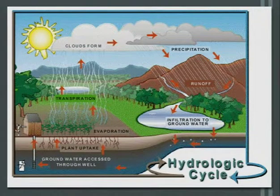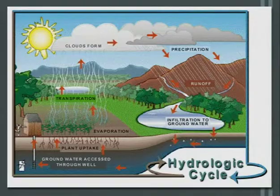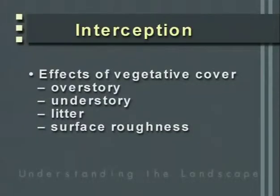Going back to the hydrologic cycle, one of the first losses of precipitation is interception — when precipitation is captured or retained by vegetation, including the overstory, understory, litter, forest duff, or rangeland duff, and also part of the surface roughness or detention storage. Interception is important because rain has fairly high kinetic energy depending on particle size and intensity. The vegetation captures that kinetic energy, so rain that does reach the forest or range floor has the opportunity to infiltrate.